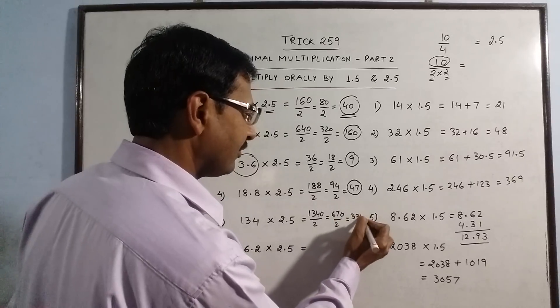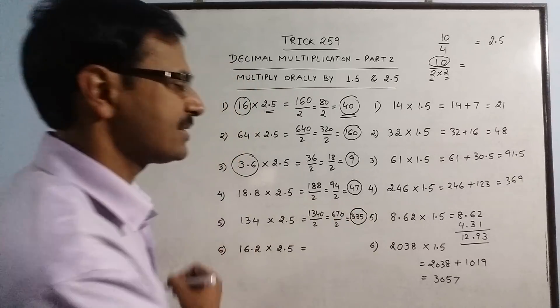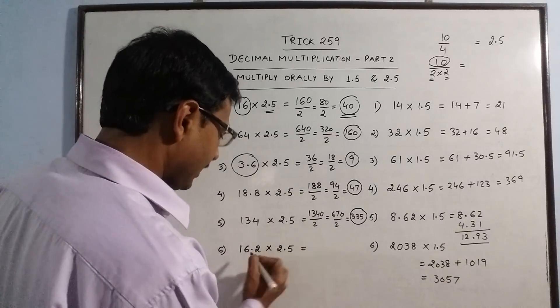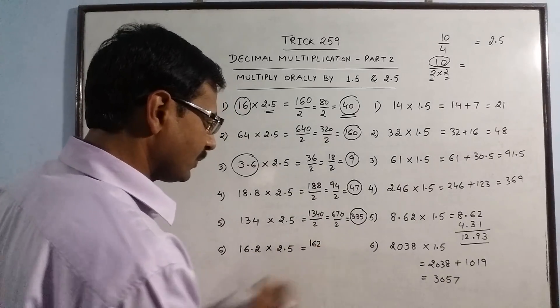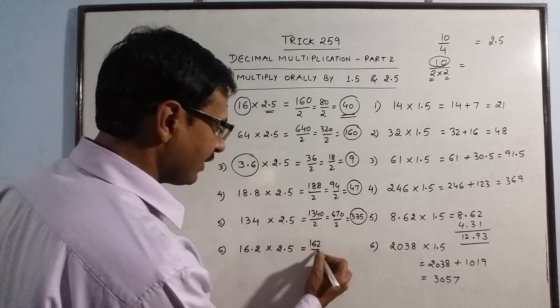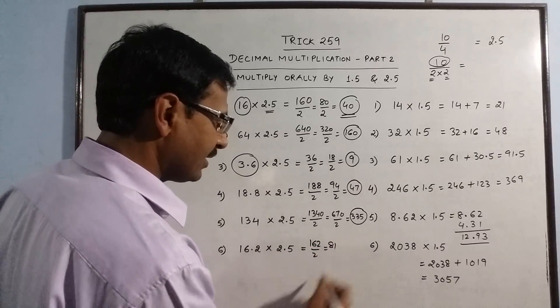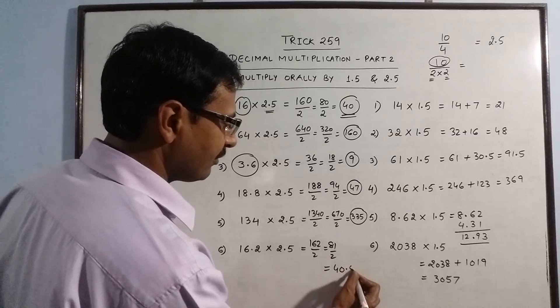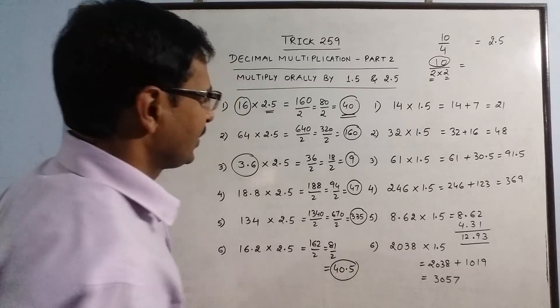Finally, we have 16.2. So multiply this by 10, this is 162. And 162 divided by 2 is 81. 81 divided by 2, you get your answer as 40.5.